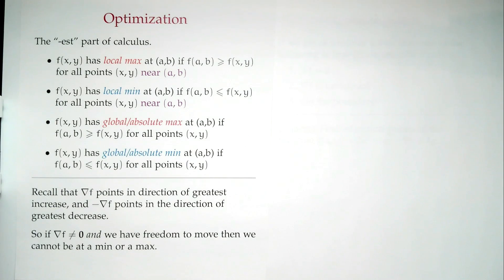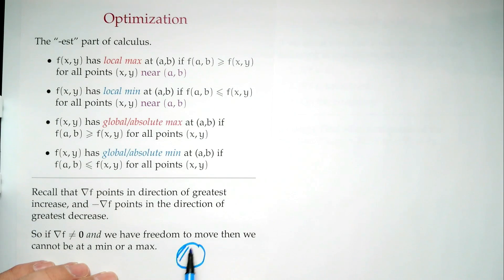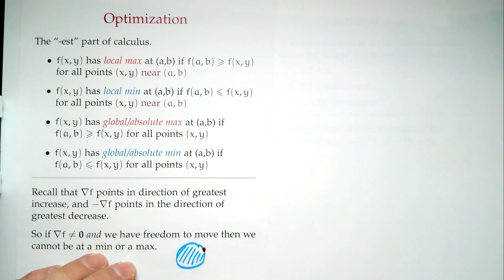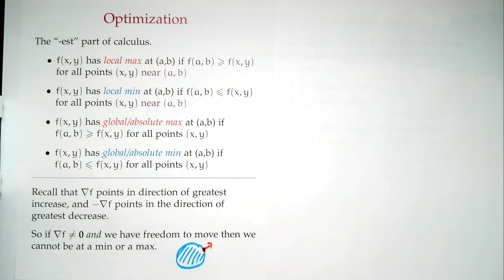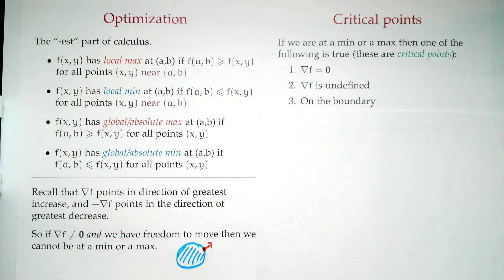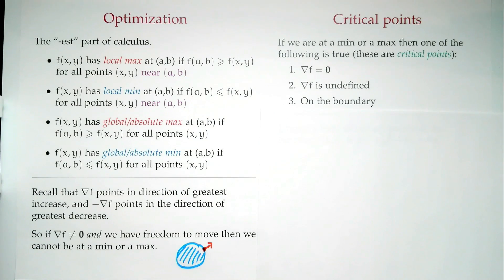What do I mean by 'you can move'? Your domain might look like a circle, and you might come to a point on the edge where the gradient says go that way — but you can't, because you'd be outside your domain. So 'freedom to move' means you're away from your boundary. We now know that max and min can only happen at what we call critical points.